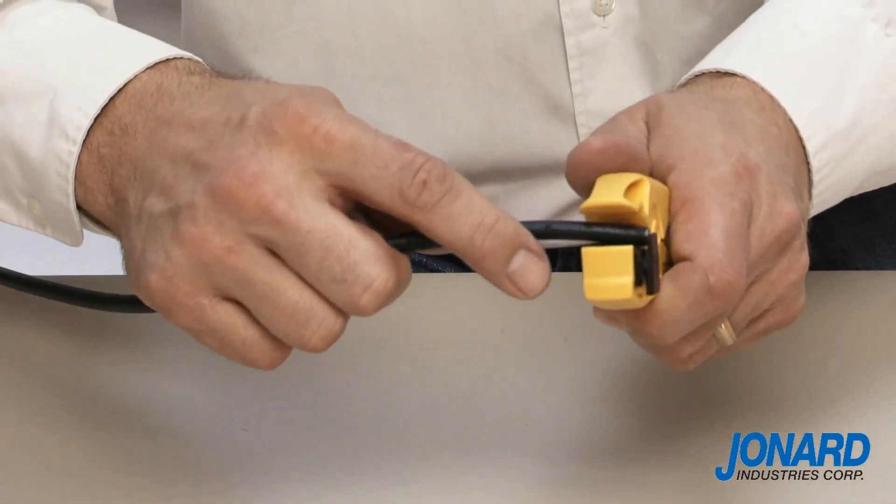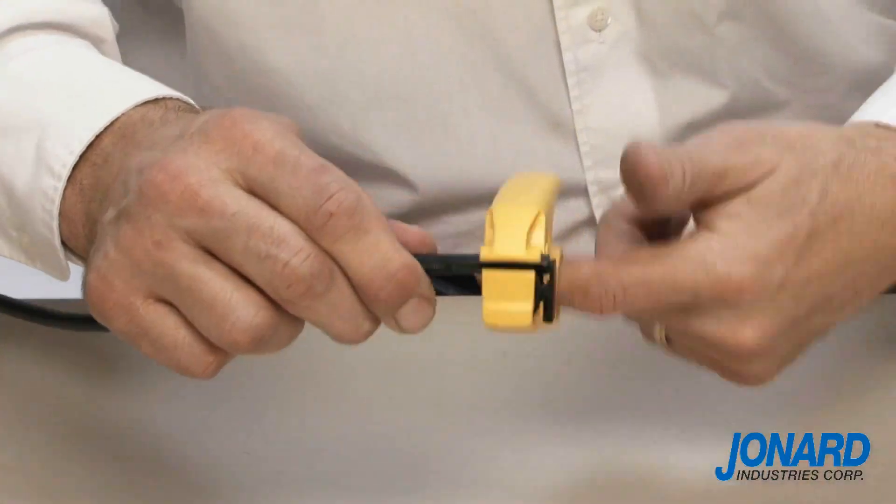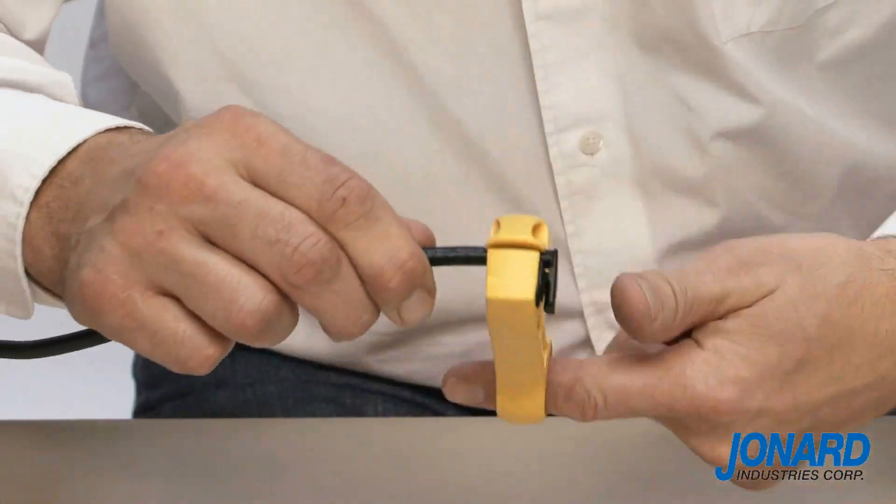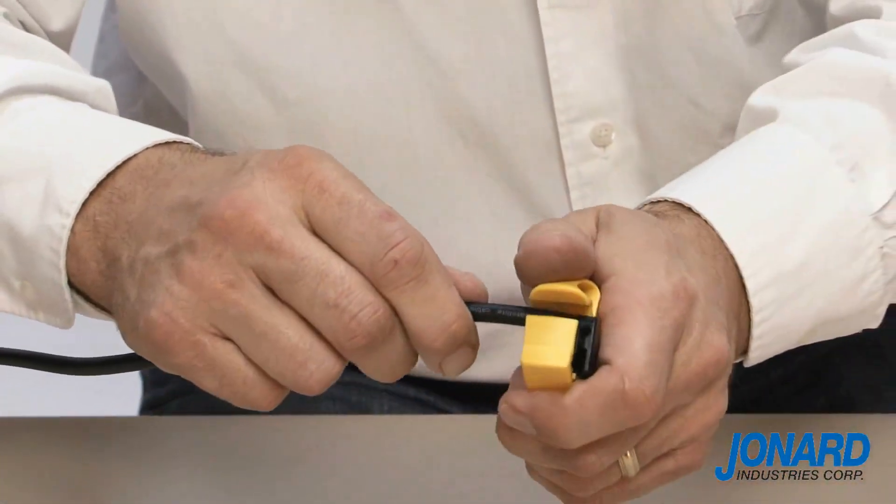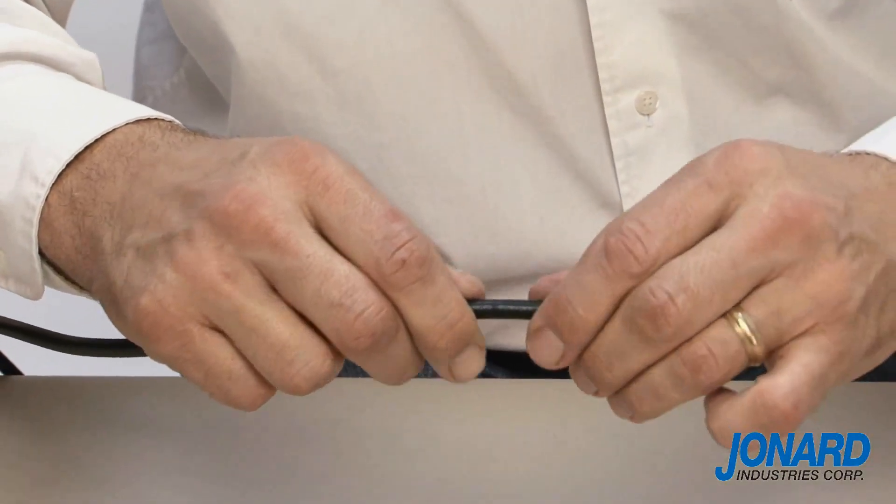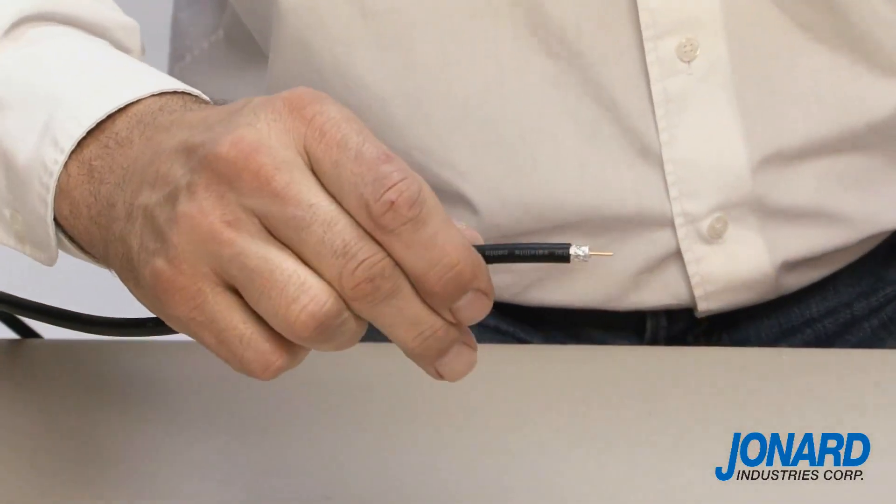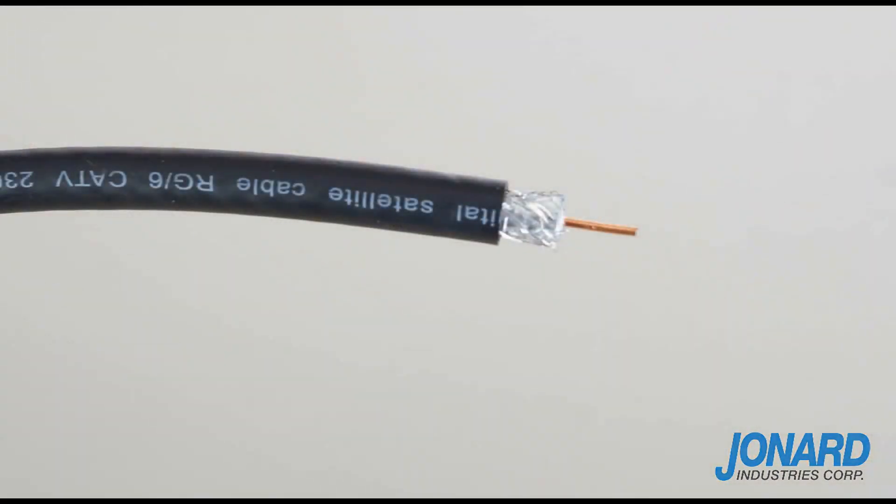After cable insertion, turn the tool several times around the cable until you no longer feel any resistance. Remove the tool and pull the strip jacket and shield away from the cable. The cable is now ready to be terminated.